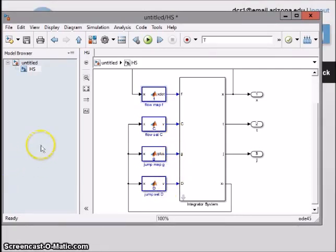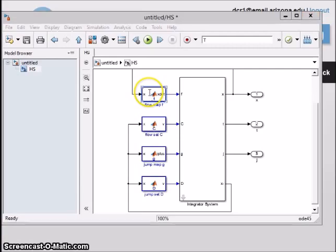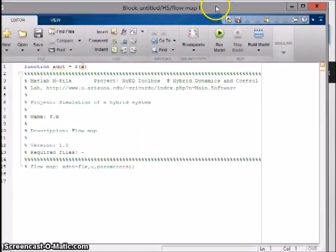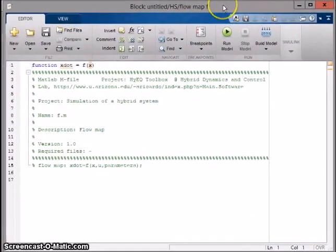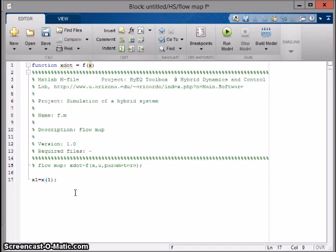We'll begin coding in the flow map F. Double-click the MATLAB function. Delete the current contents of the function. We'll start by defining the state. The state allows us to draw upon the values of theta and theta dot at any given time t. To define the state, type x1 is equal to x parenthesis 1, and x2 is equal to x parenthesis 2.